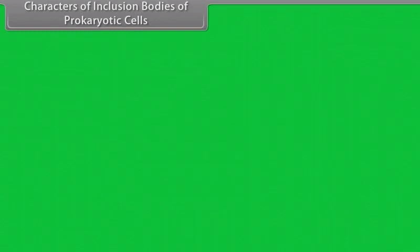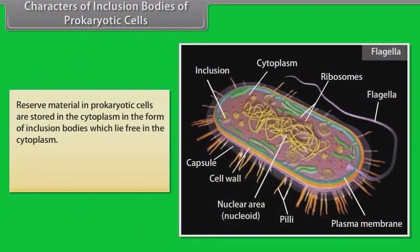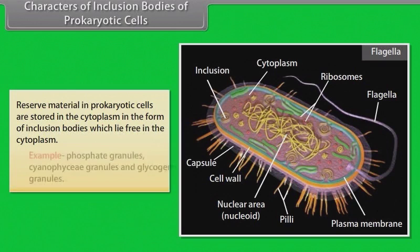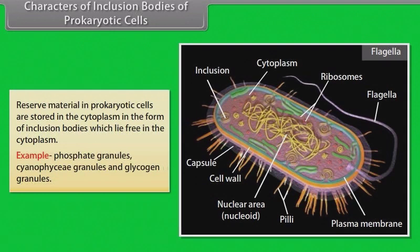Characters of inclusion bodies of prokaryotic cells: Reserve material in prokaryotic cells is stored in the cytoplasm in the form of inclusion bodies, which lie free in the cytoplasm. Examples include phosphate granules, cyanophycin granules, and glycogen granules.